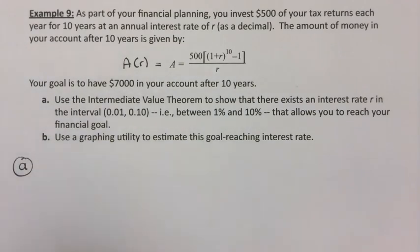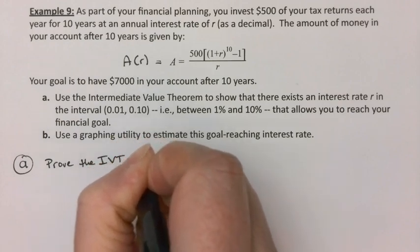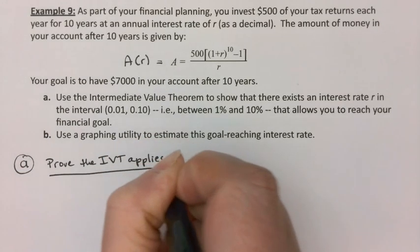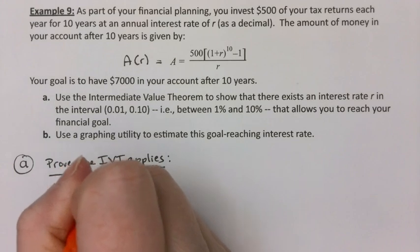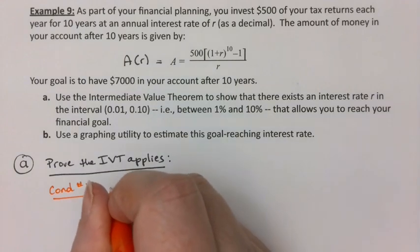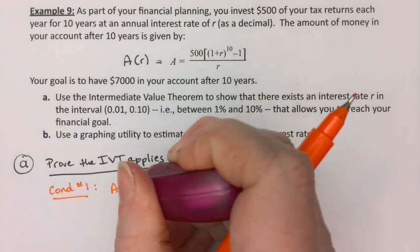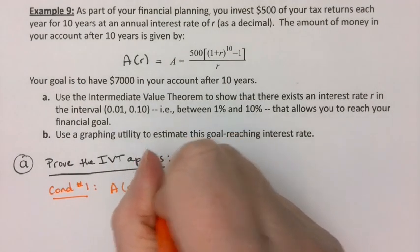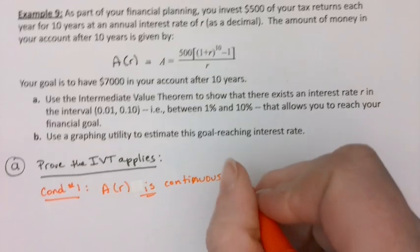So for part A, I need to prove that I can use the Intermediate Value Theorem and then do so. To prove the IVT applies, I need condition 1 and condition 2. Condition number 1 is that A of R has to be continuous. A of R is continuous on our interval, which would be from 0.01 to 0.10.